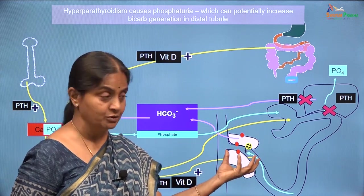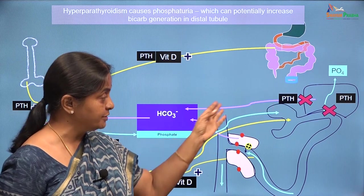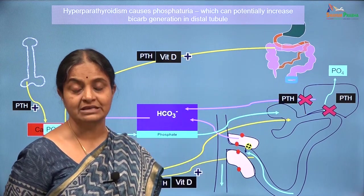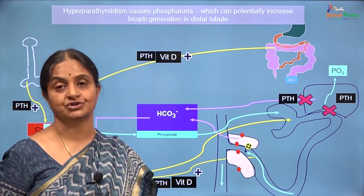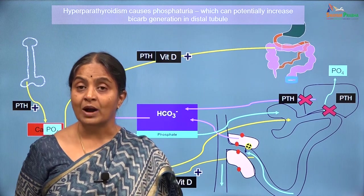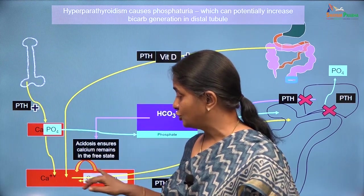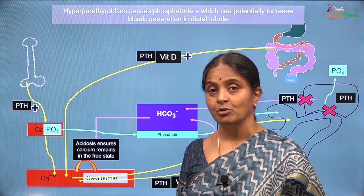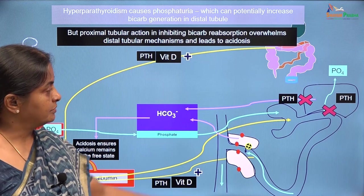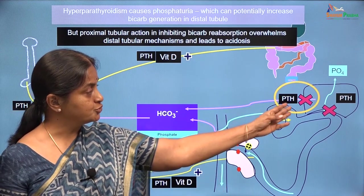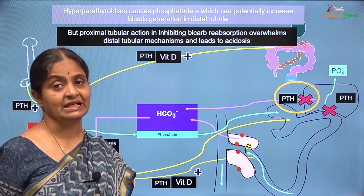Though all this is happening at the level of the distal tubule, because the more dominant mechanism — bicarbonate reabsorption in the proximal tubule — is directly inhibited by parathormone, we will not see metabolic alkalosis in the hypercalcemic state due to parathormone; indeed we will see metabolic acidosis. The key is that while vitamin D attempts to increase total calcium, the focus of parathormone is to increase ionized calcium and not allow it to go into the bound state. So parathormone causes metabolic acidosis due to inhibition of bicarbonate reabsorption; it does not lead to metabolic alkalosis though it is a hypercalcemic state.